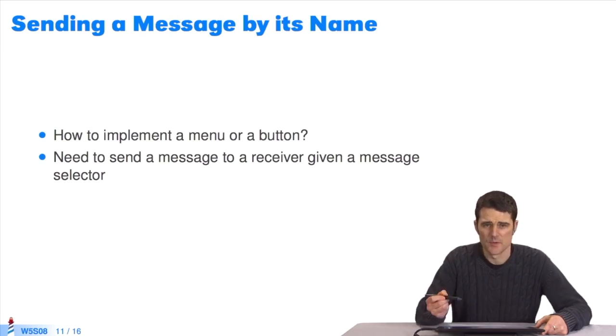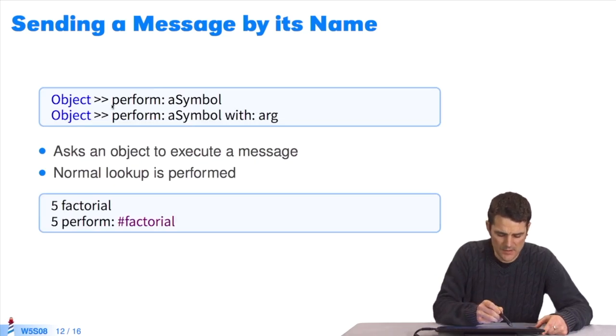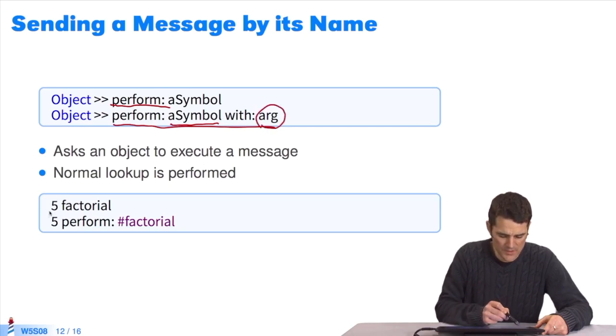Another example. We'd like to implement a menu or a button. By clicking on it, we want to send a message to the object behind it, according to the button's name, for example. How do I turn a string into a message to send to an object? I've an intercession method for that, perform defined under object. I pass it a symbol, the name of a message to execute, and it will send this message to the object in question. I've a second kind of message, perform with. I can give the name of the symbol, the name of the method to execute, and then pass a list of arguments.